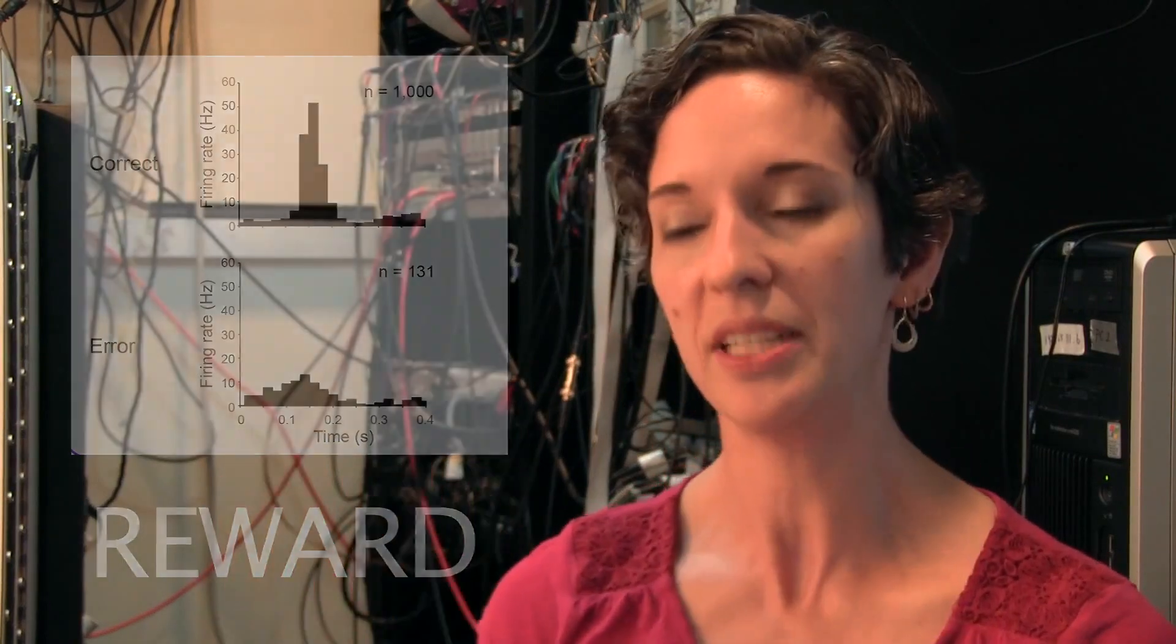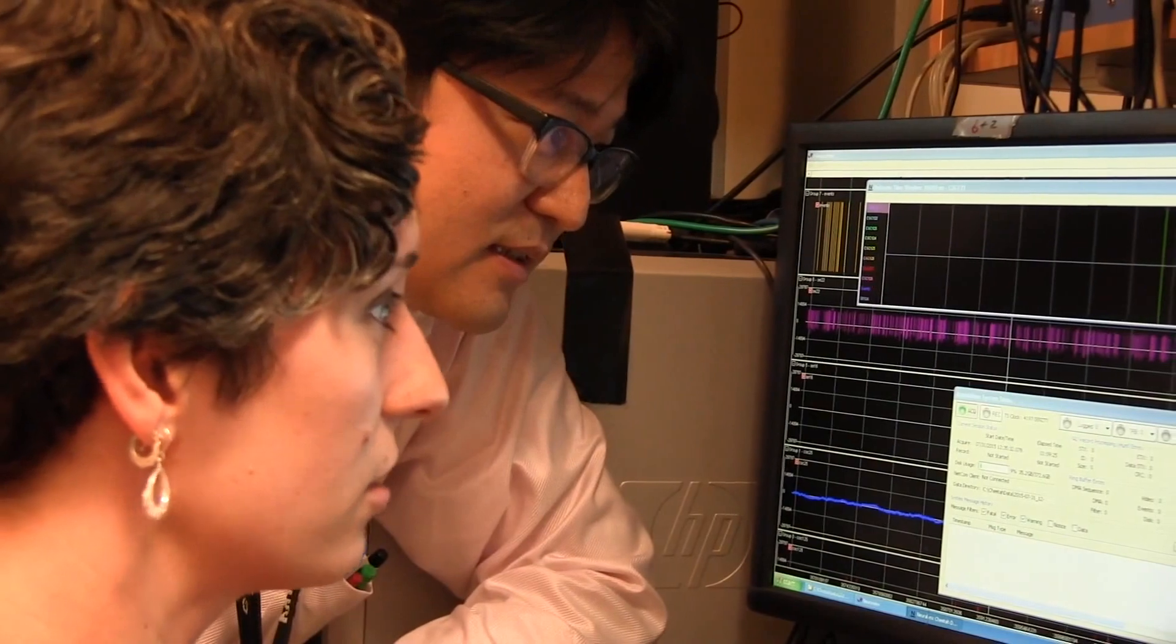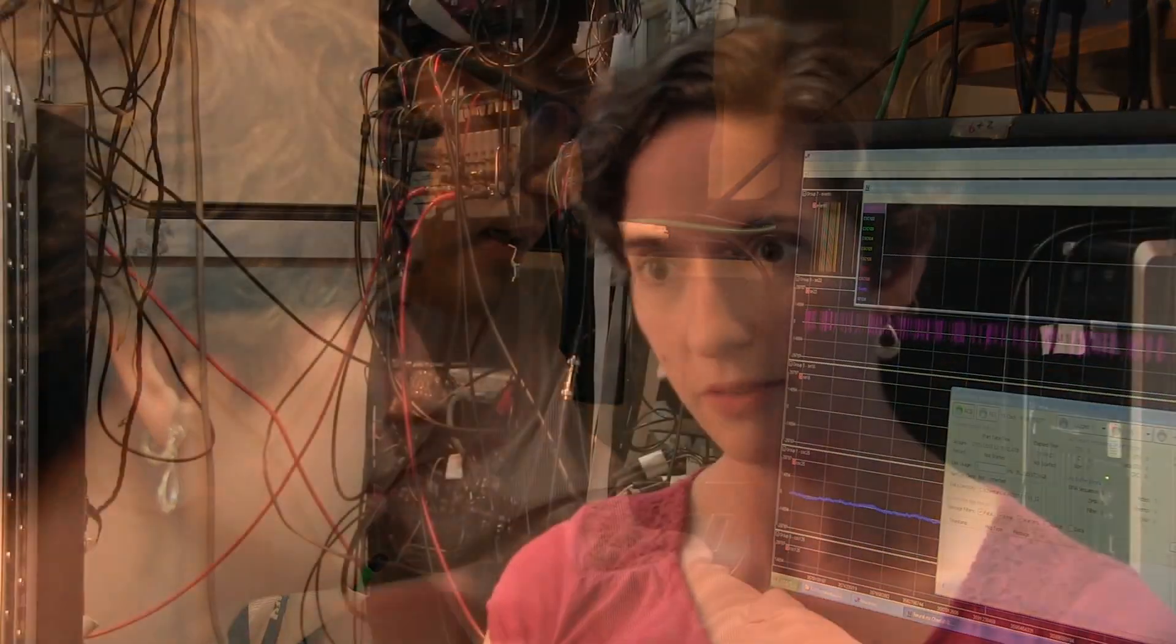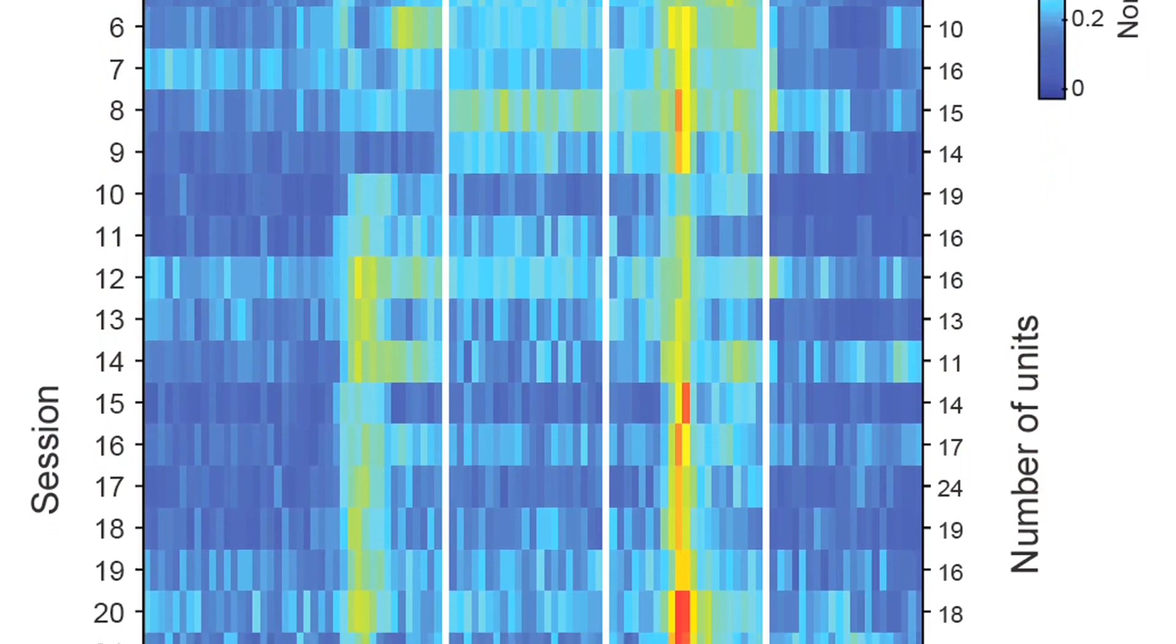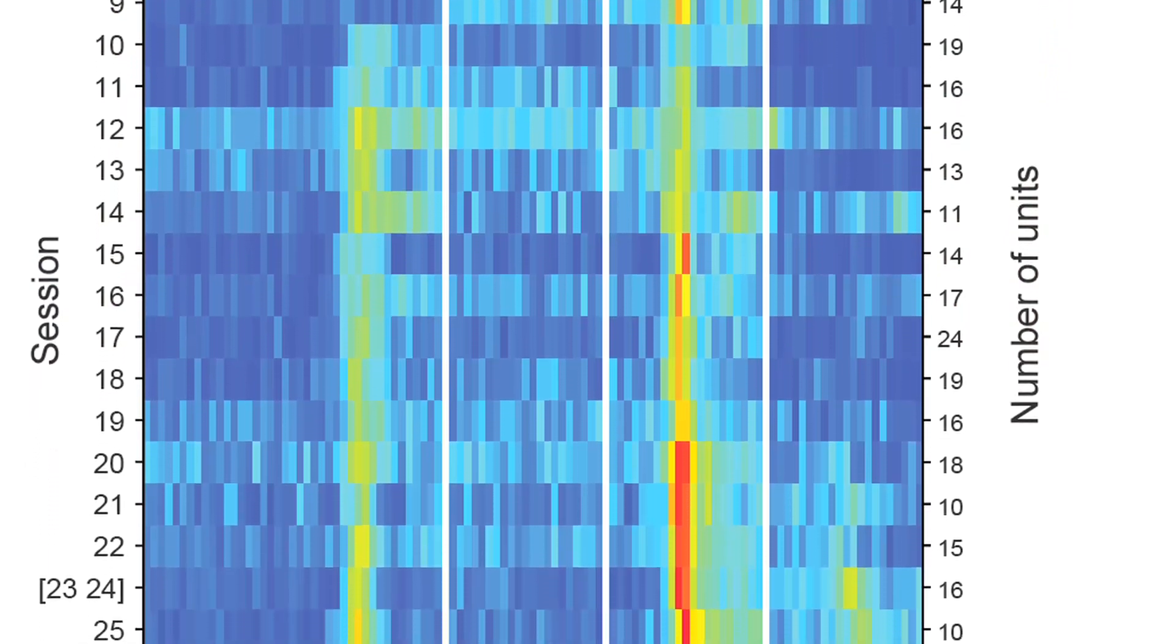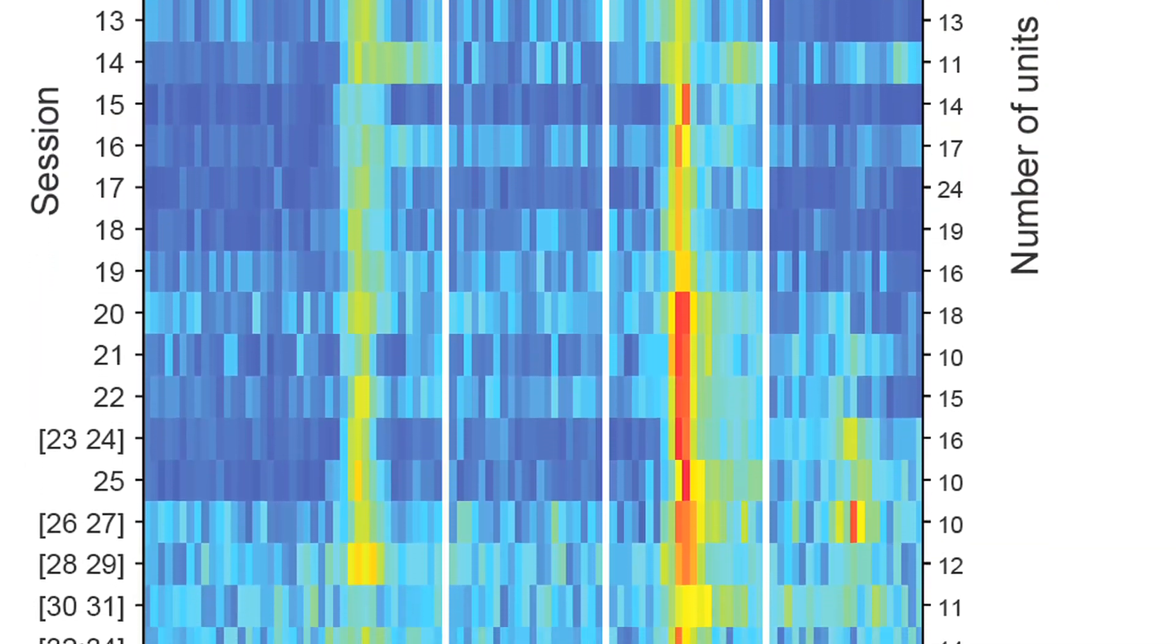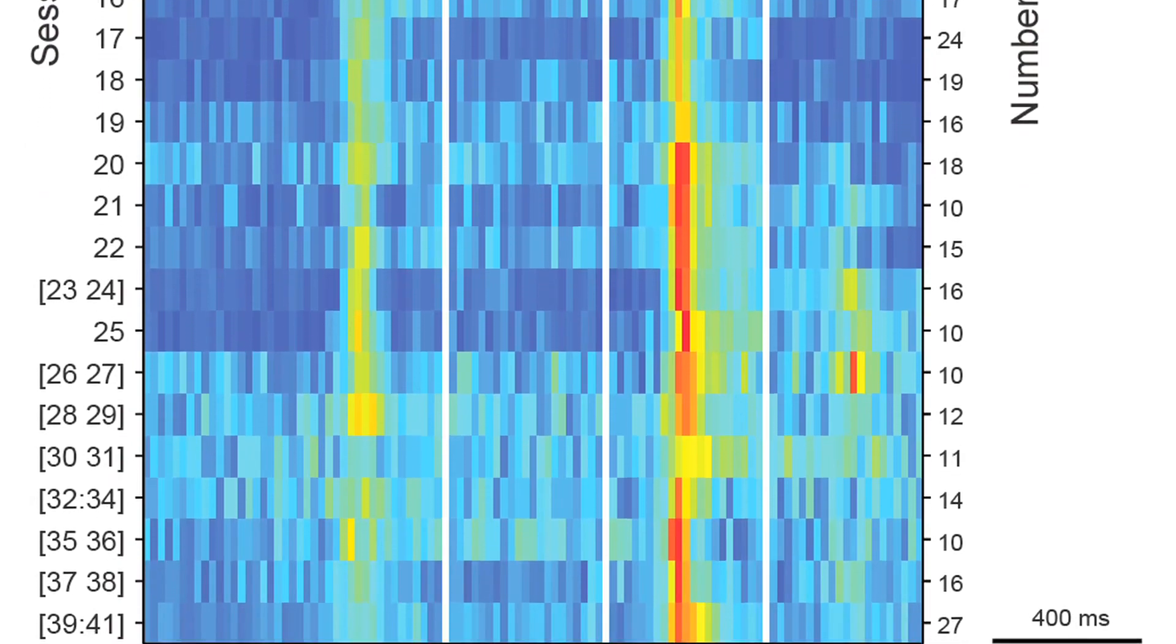We next wanted to know what happens to this representation while the animal is learning. What we found is that over time, one of the populations of cells—the cells that respond to both cost and reward together—those cells are gradually refining their responses. They're becoming more and more refined in exactly when they're firing at the end of the trial, and they're firing a bit more strongly.